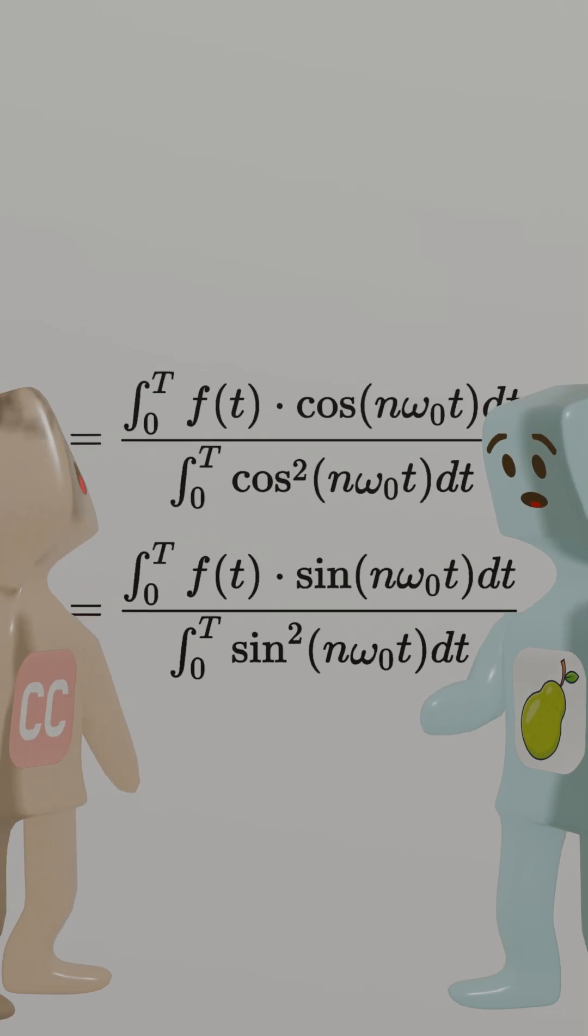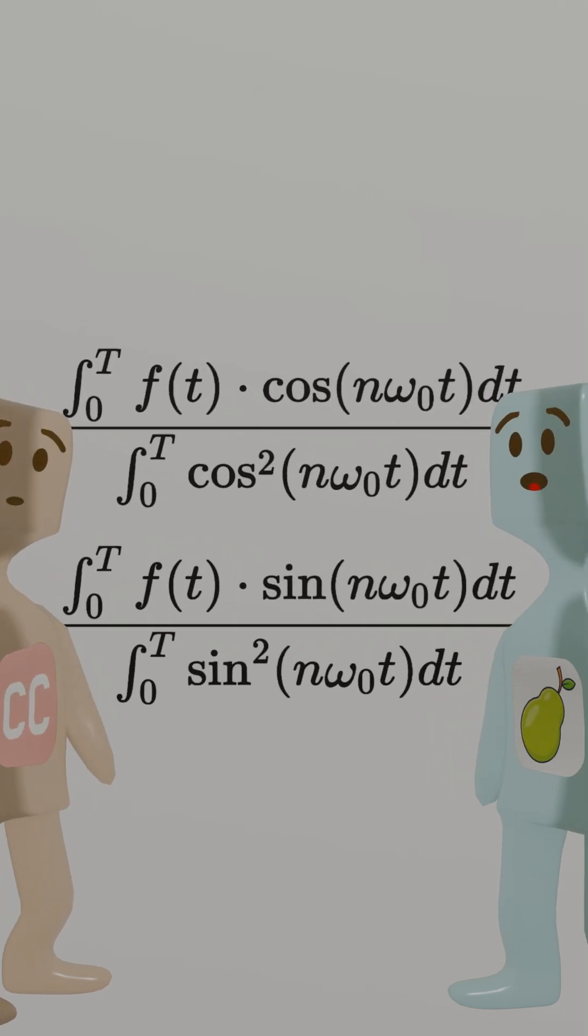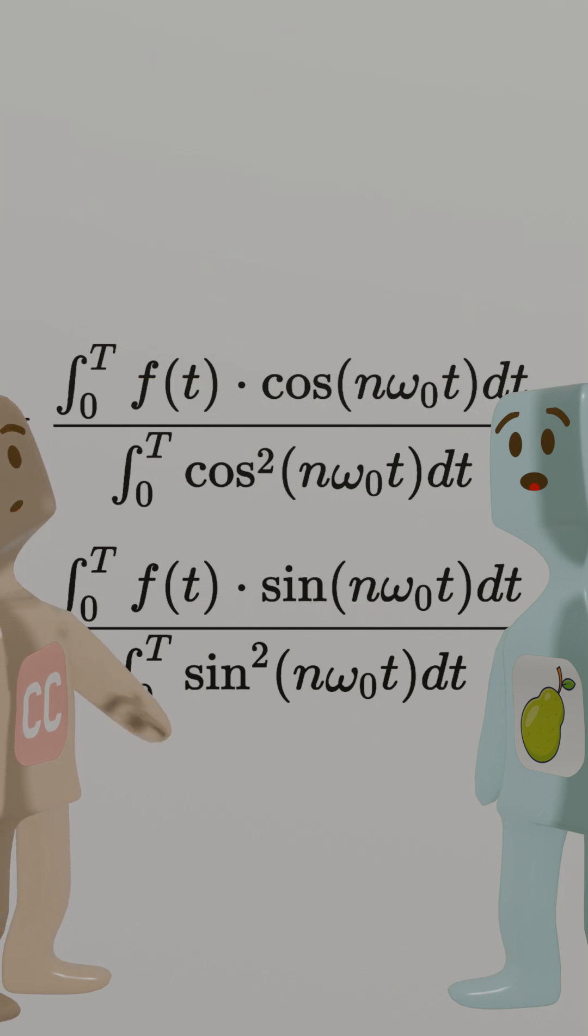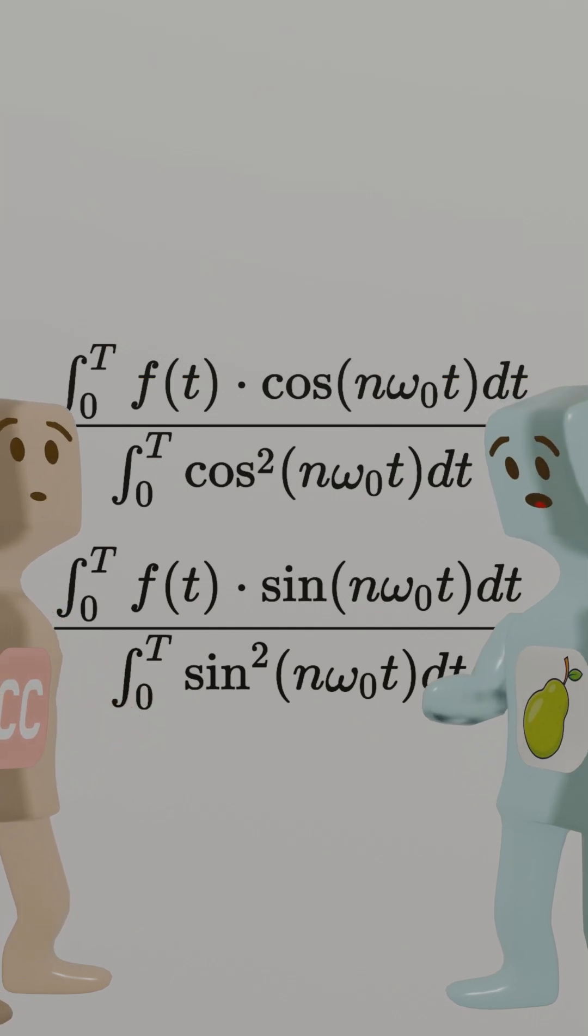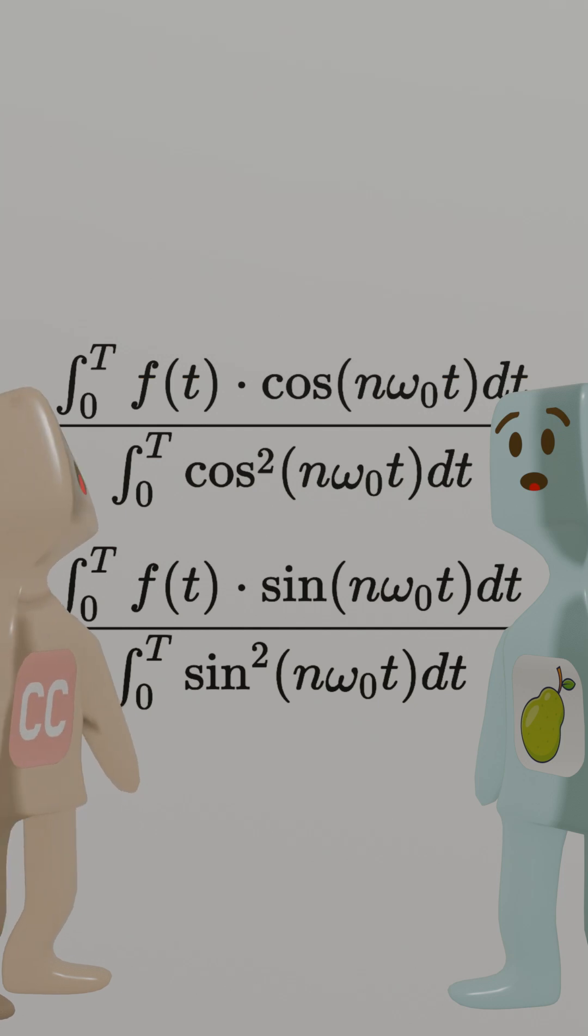Huh. So the Fourier series is just calculating the similarity between a periodic function and a bunch of sine and cosine functions of different frequencies. But the formulas you wrote are still different from the textbook.